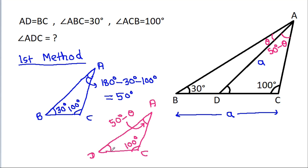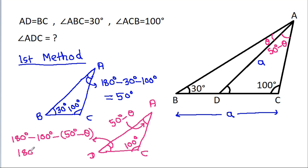So the remaining angle in triangle ADC will be 180 degrees minus 100 degrees minus 50 degrees minus theta, that will be 30 degrees minus theta. So angle ADC will be 30 degrees plus theta.